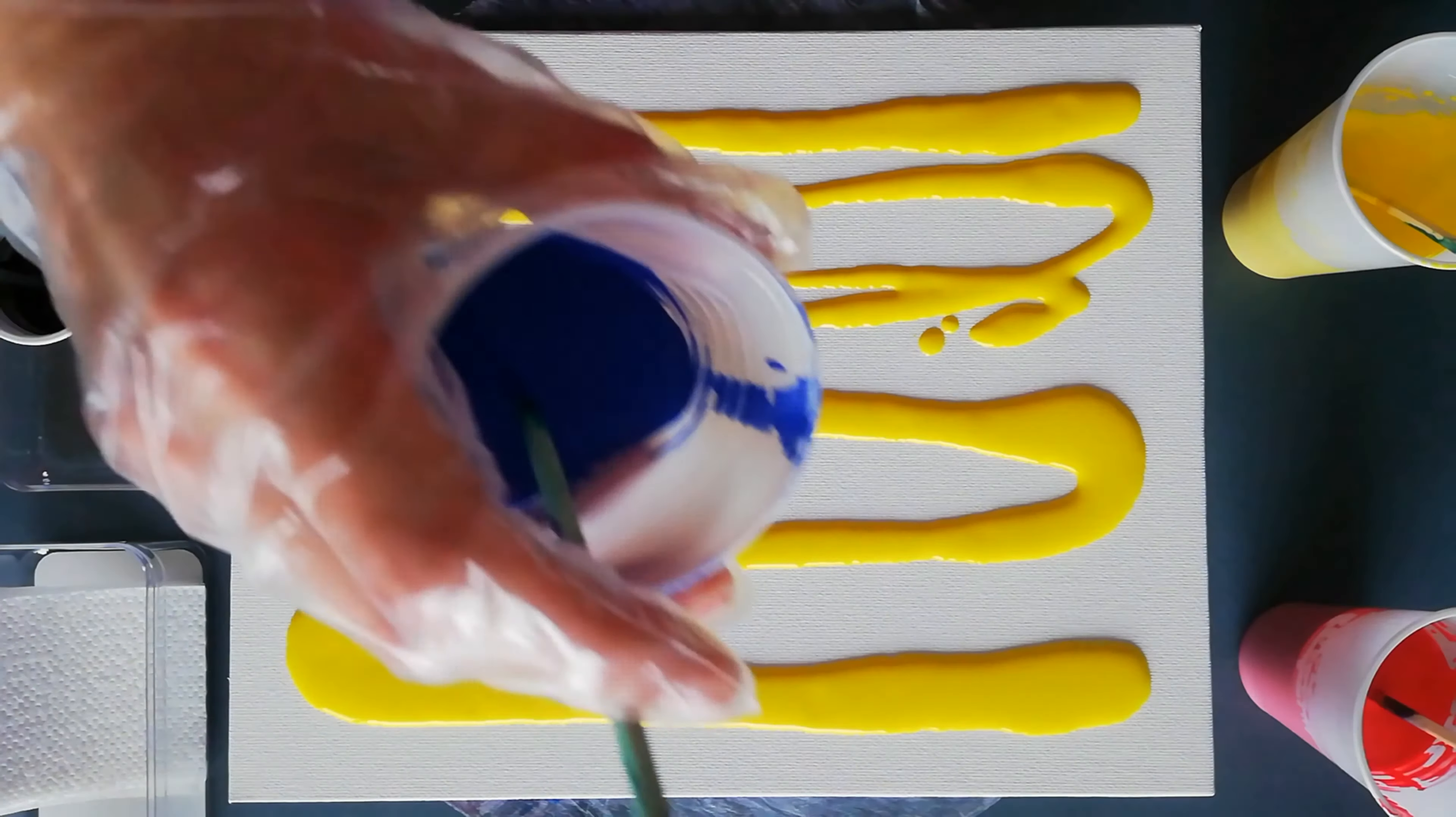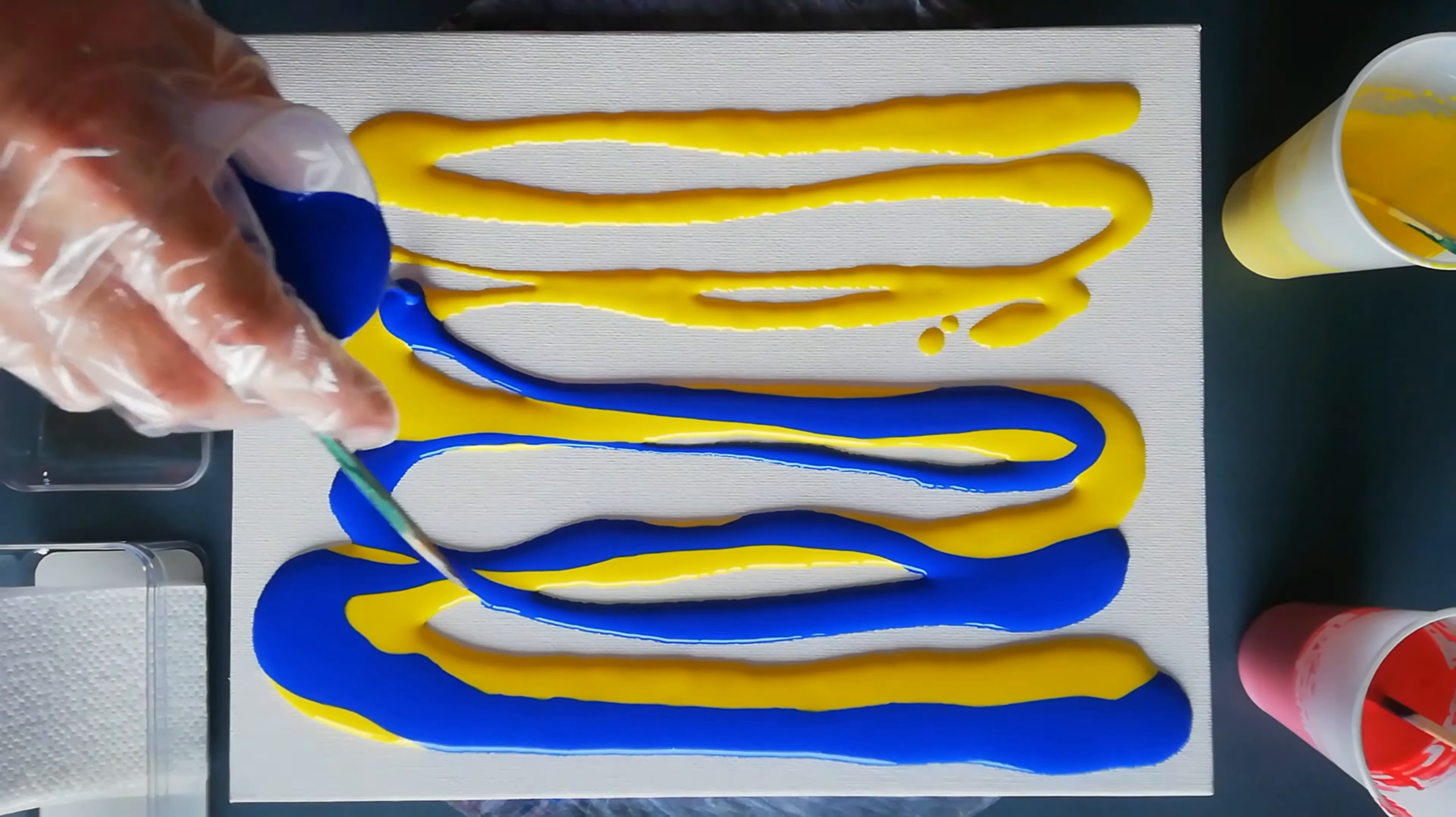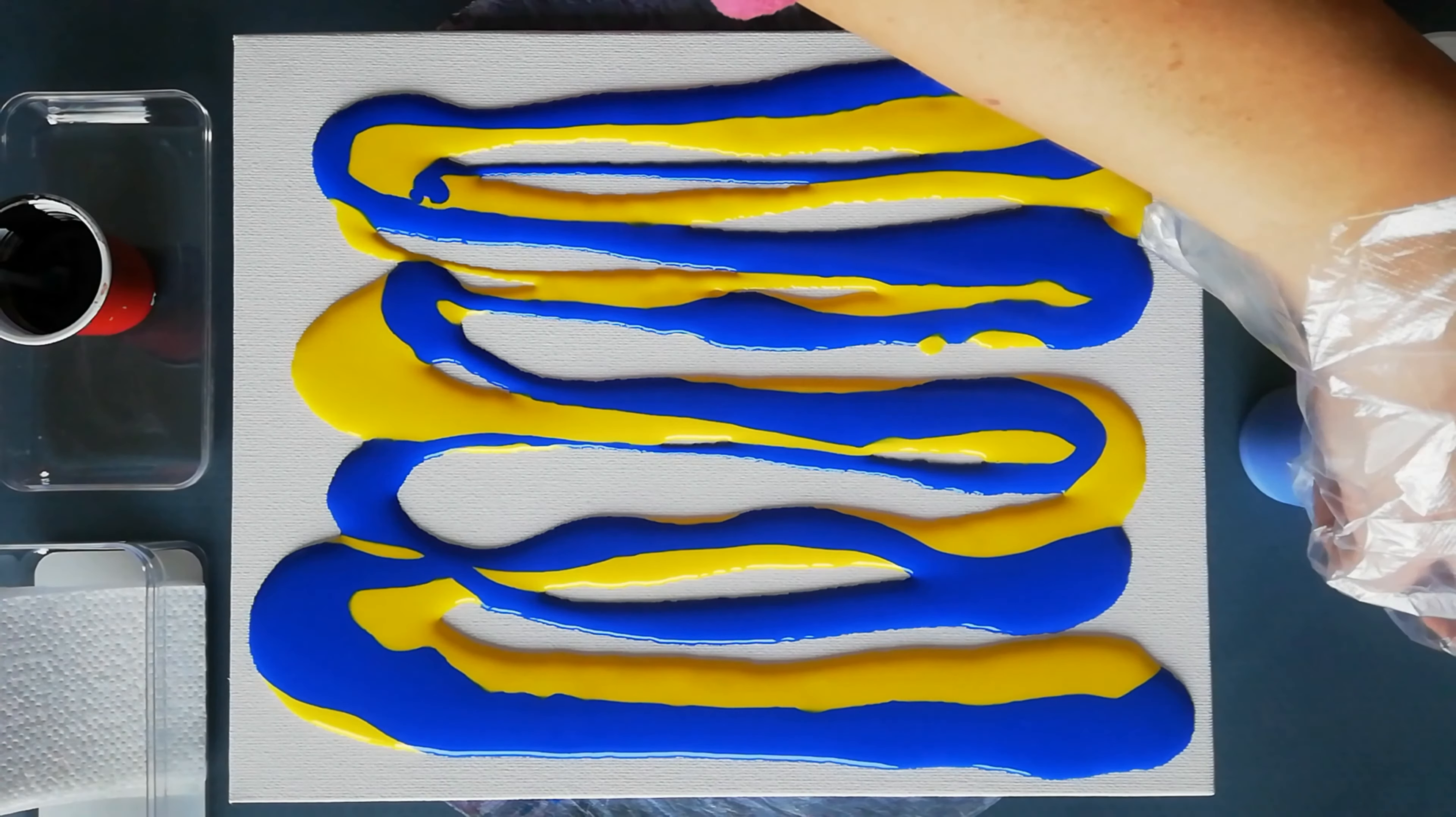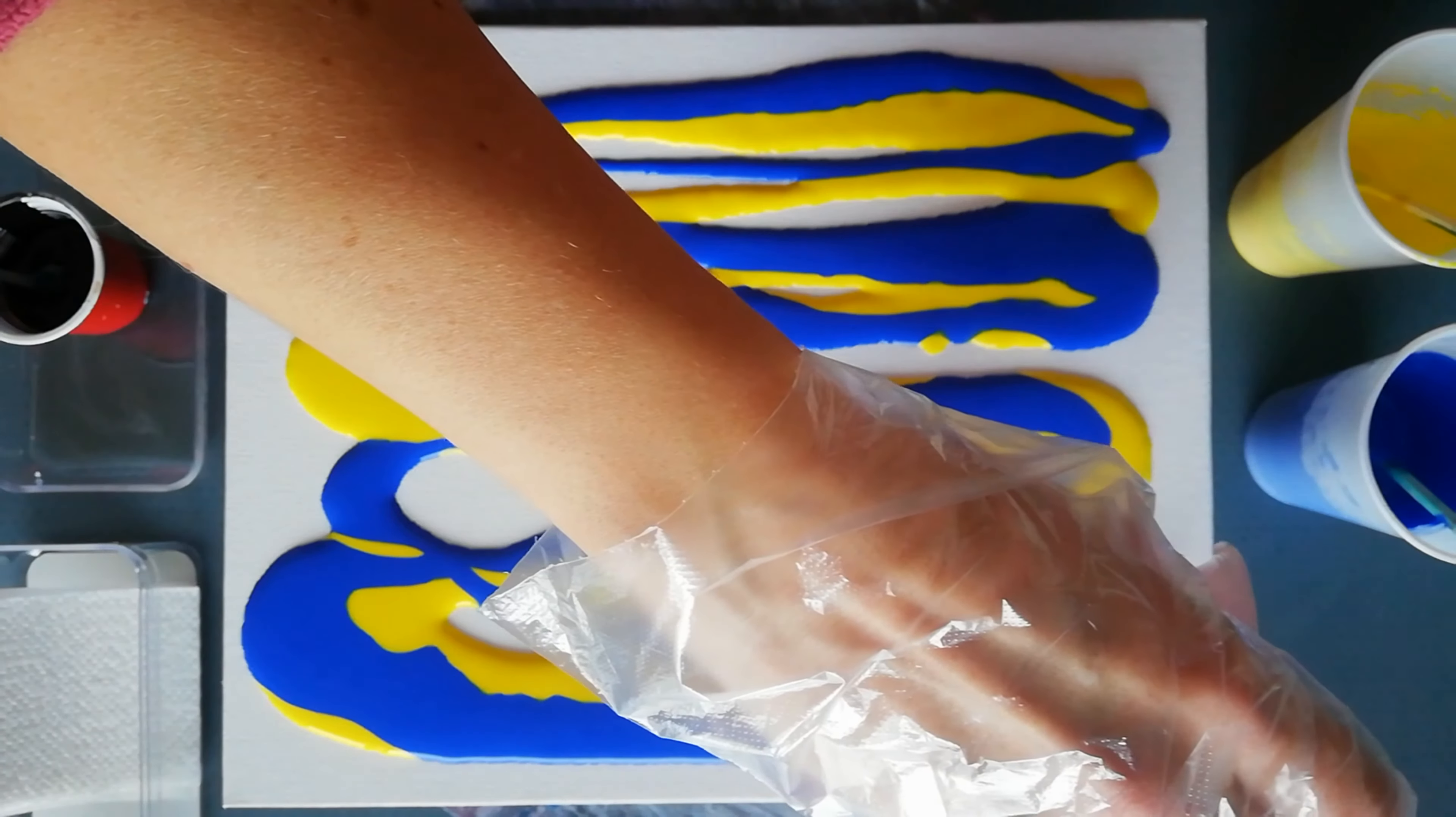Then I'm gonna pour the blue slightly on top, on certain areas, because yellow and blue make green. So when I'm going to heat it after I swipe, the silicone in the yellow is going to rise through the blue, creating green. At least, that's my theory.